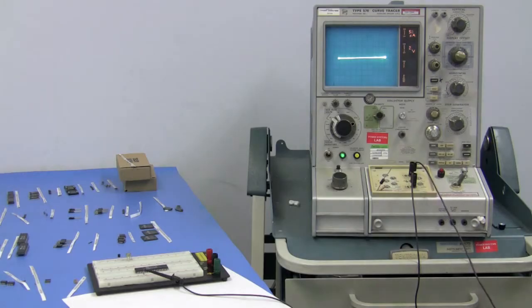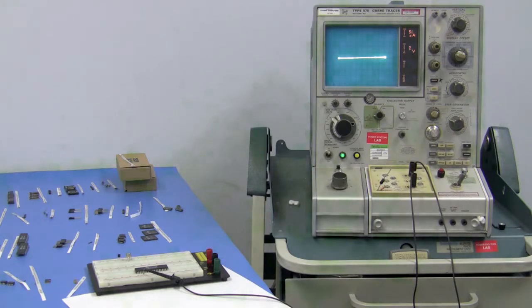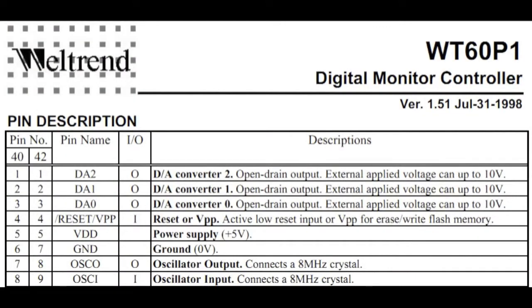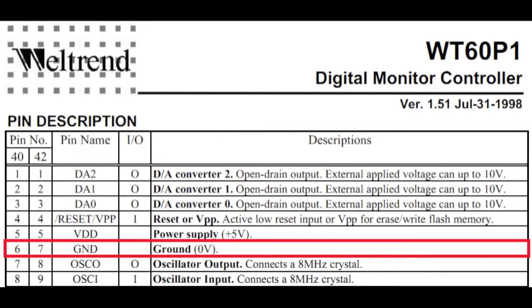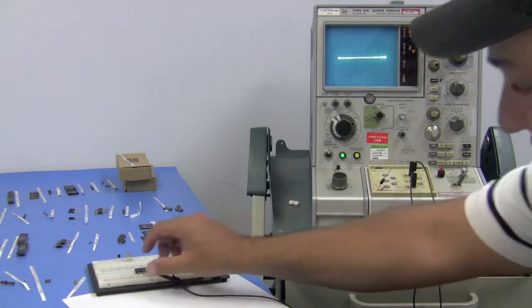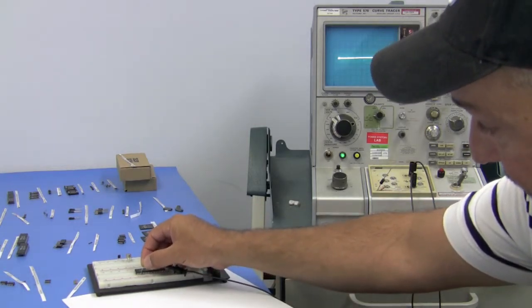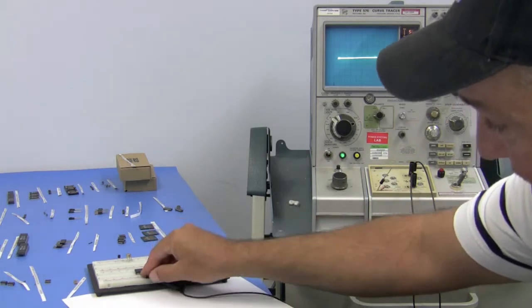First thing you do is take your emitter and tie it to the ground pin of your device. On this device, it happens to be pin 6. I'm going to grab this and go 1, 2, 3, 4, 5, 6.